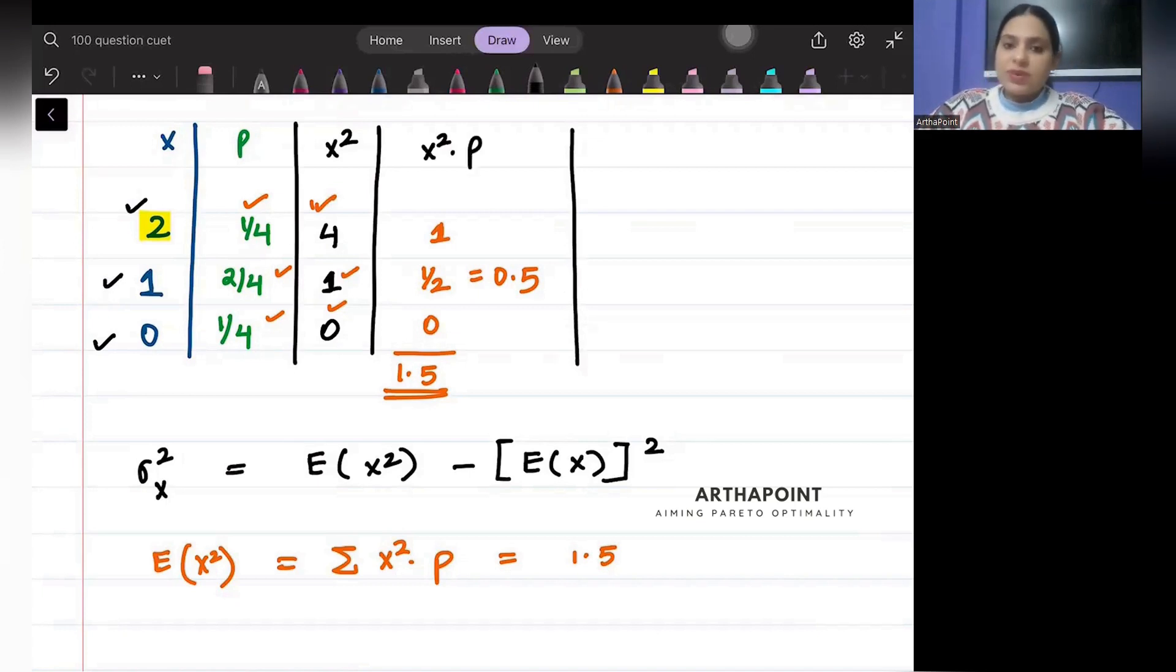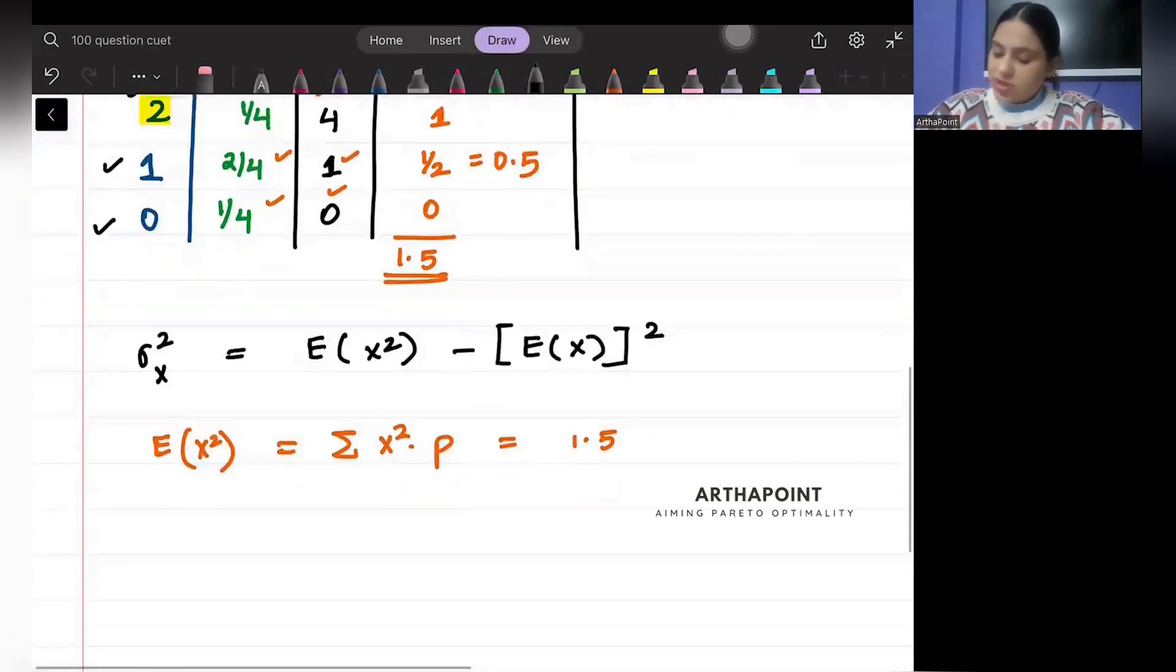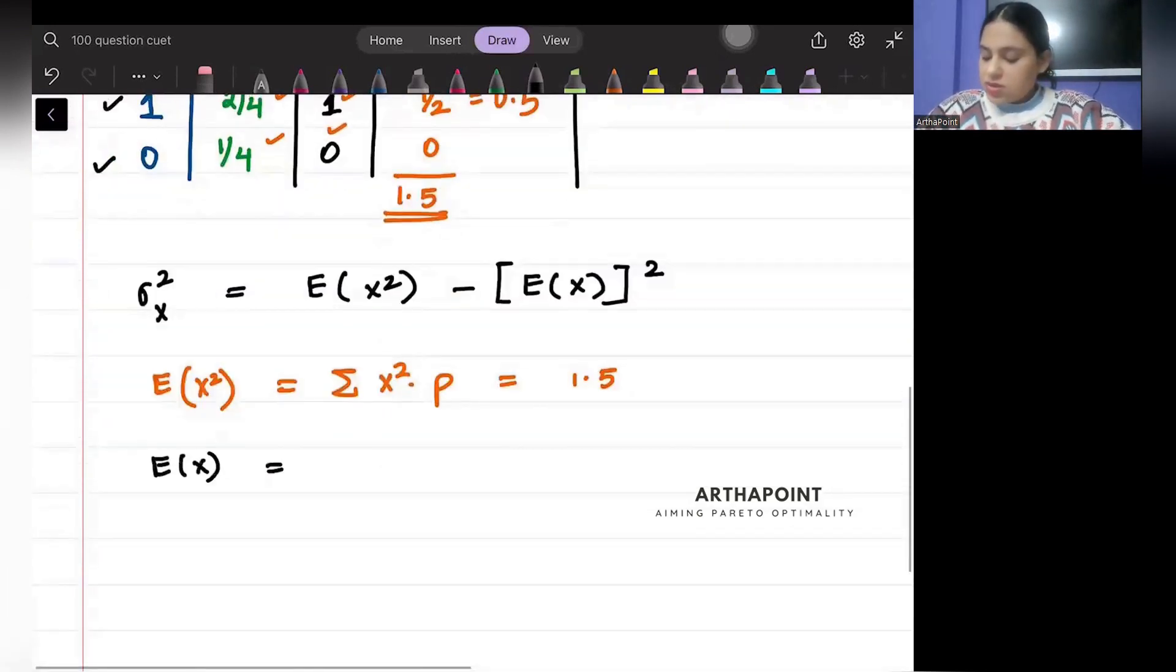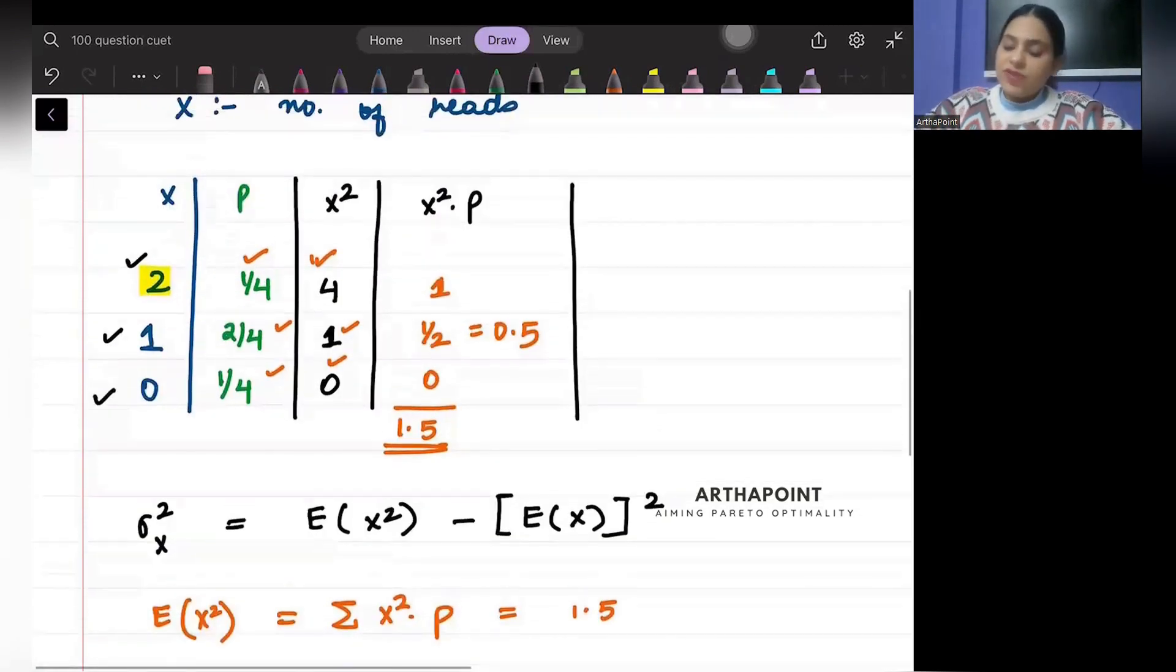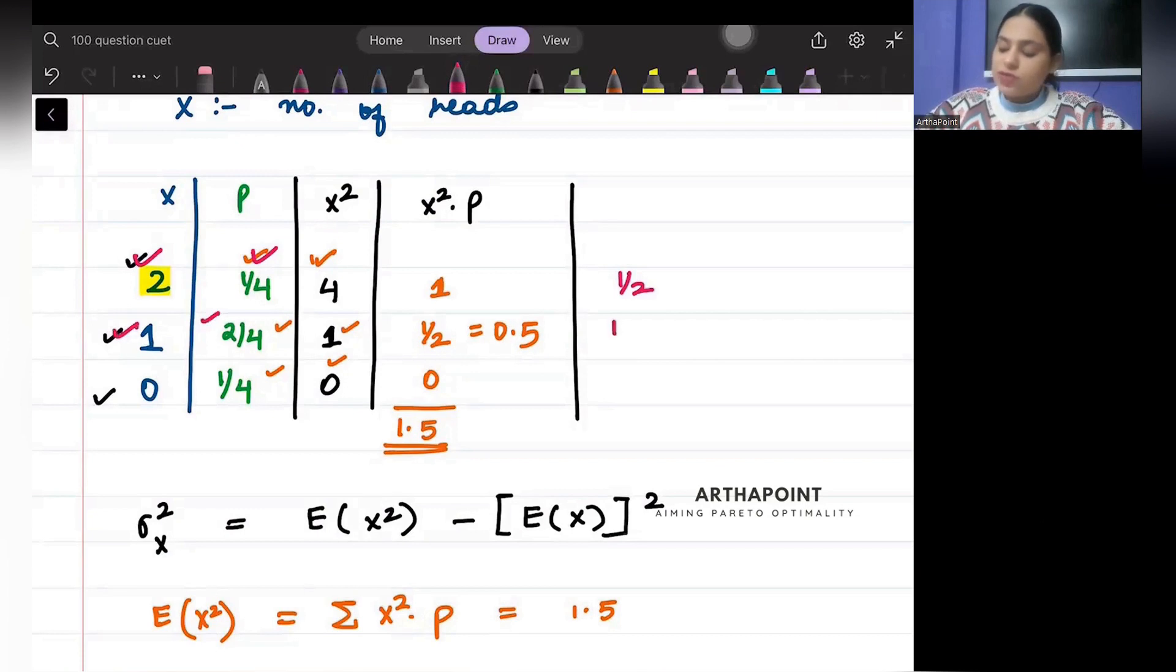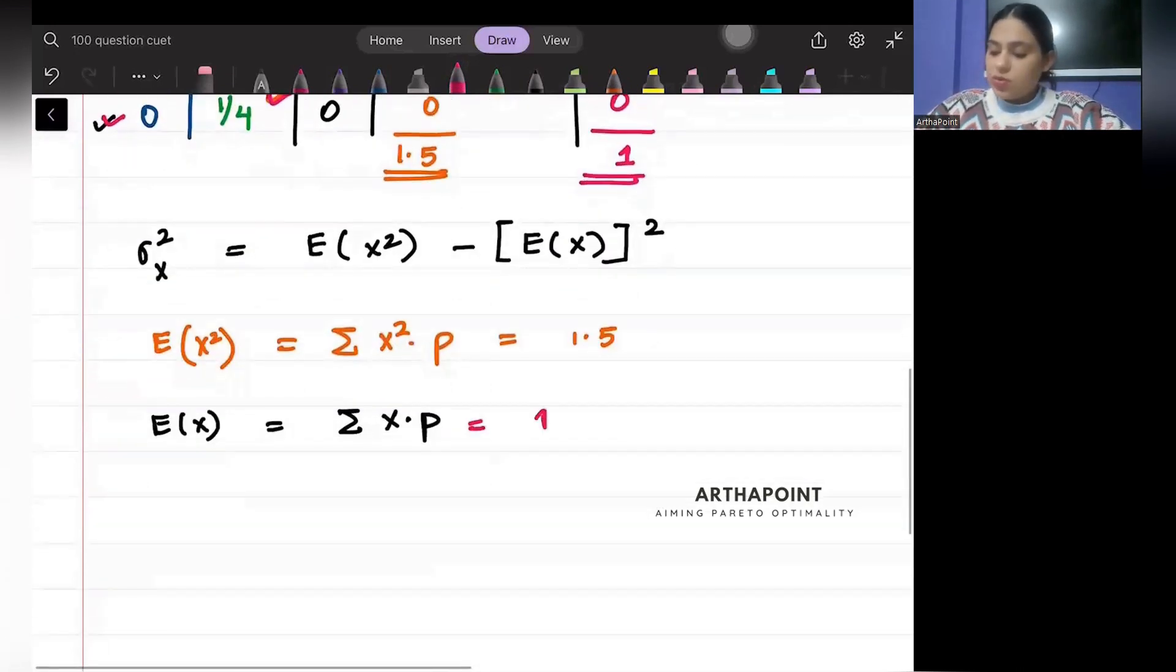What will be E(x), beta? E(x) can be written as summation x into p. So if I do summation of x into p: 2 into 1 by 4 will be 2 by 4, which means half. 1 into 2 by 4 will be 2 by 4, which means half. 0 into 1 by 4 will be 0. So if I add this together, this will give me the answer as 1.